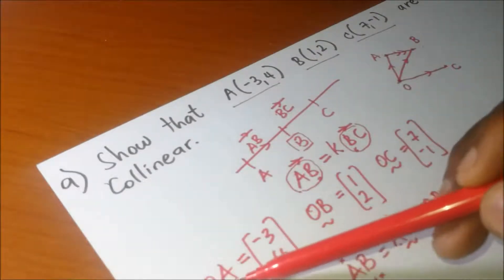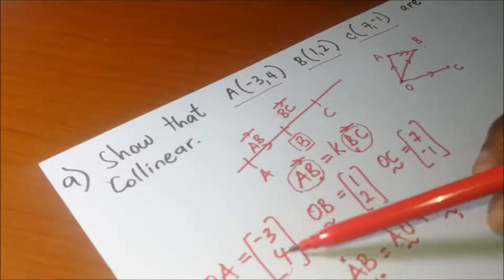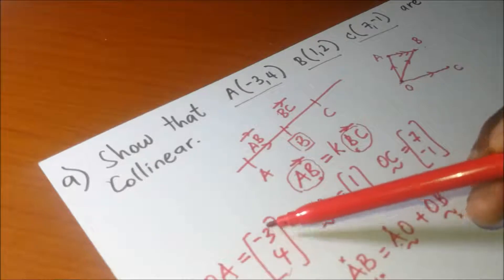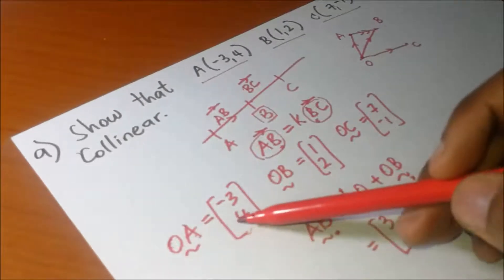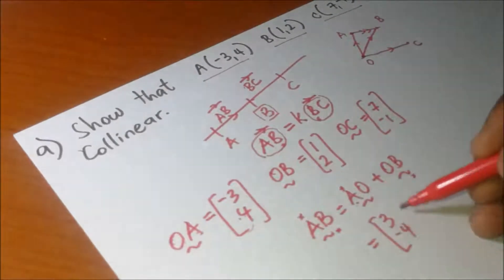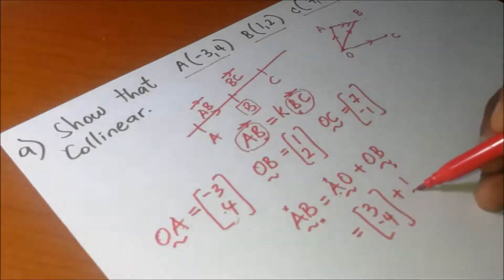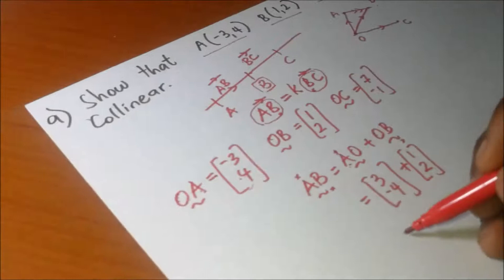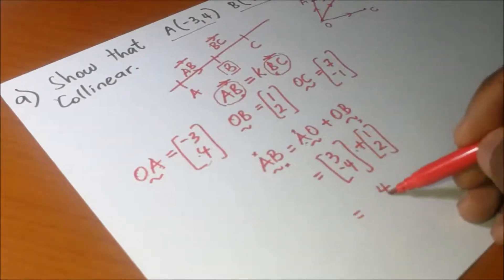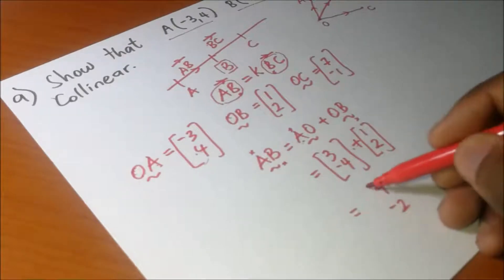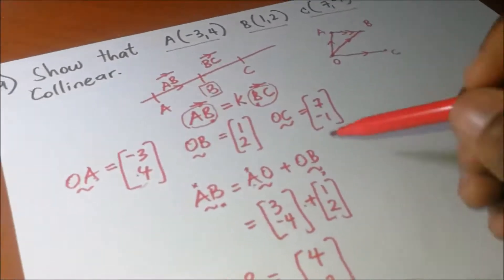AO is the reverse of OA. Since OA is (-3, 4), AO becomes (3, -4). Adding OB which is (1, 2), we get 3+1 = 4 and -4+2 = -2. So our vector AB is (4, -2).